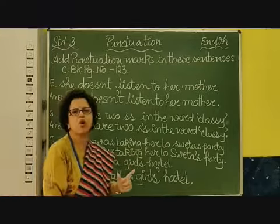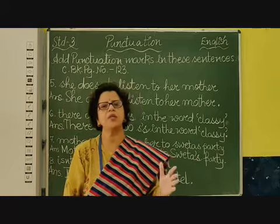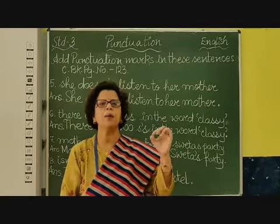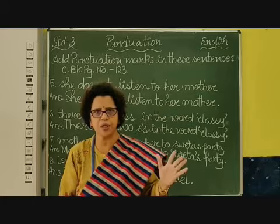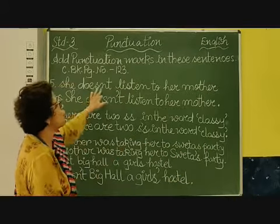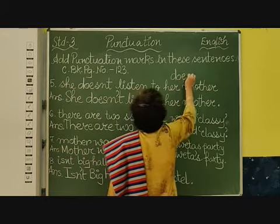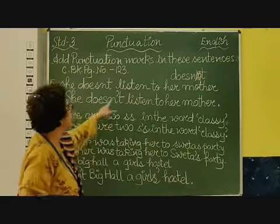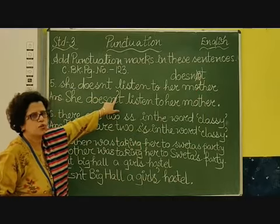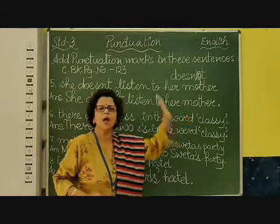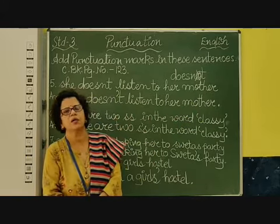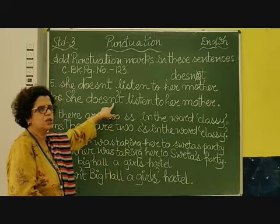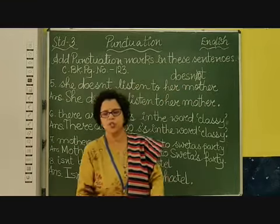Now, 'doesn't' is a short form of 'does not.' Whenever there is a short form, we use the apostrophe in place of the letter or letters we are not writing. Here we have not written the letter O — 'does not' becomes 'doesn't.' So in place of O, I have put an apostrophe mark. The sentence ends with a full stop because it is a declarative sentence. That is why we put the apostrophe here, because we have not written the O — it is a short form.